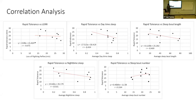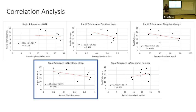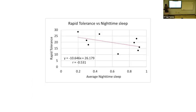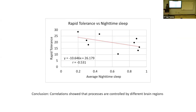The line for rapid tolerance versus nighttime sleep was semi-clear, though we still saw some outliers. Increasing replicate numbers will increase the statistical power. These are really low correlations — it's hard to say they're strong correlations since they're not near 0.7 or anything. So our focus is on rapid tolerance and nighttime sleep as the metric where we do see a moderate correlation. The conclusion is that these processes could potentially be controlled by different regions of the brain, but there is still a lack of statistical power.